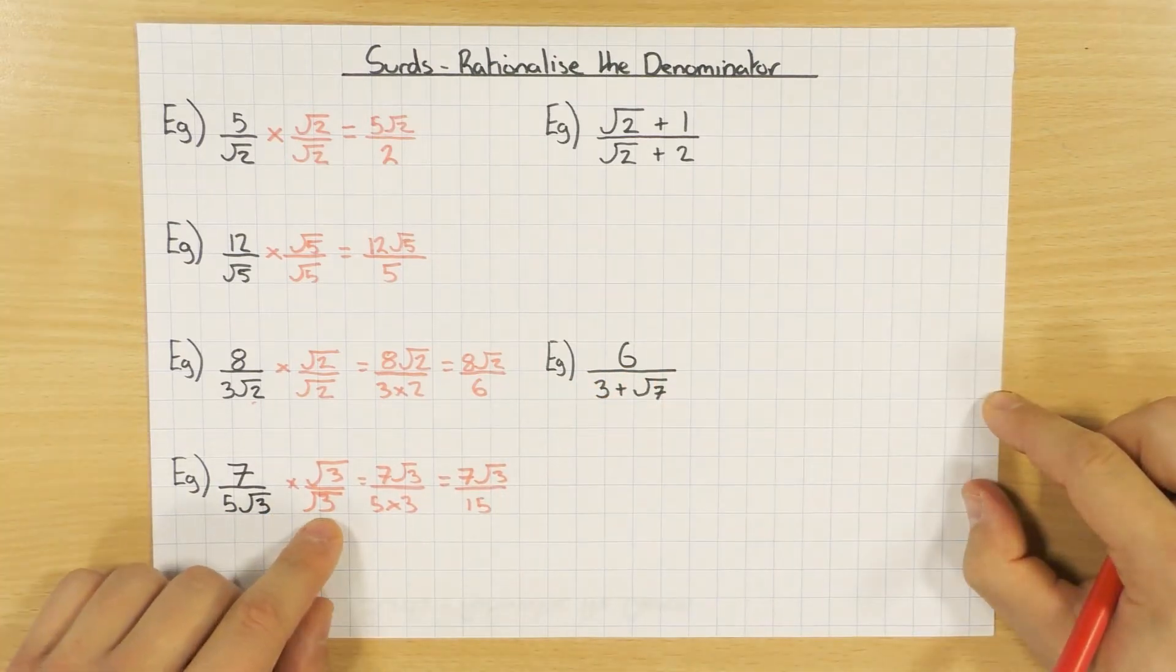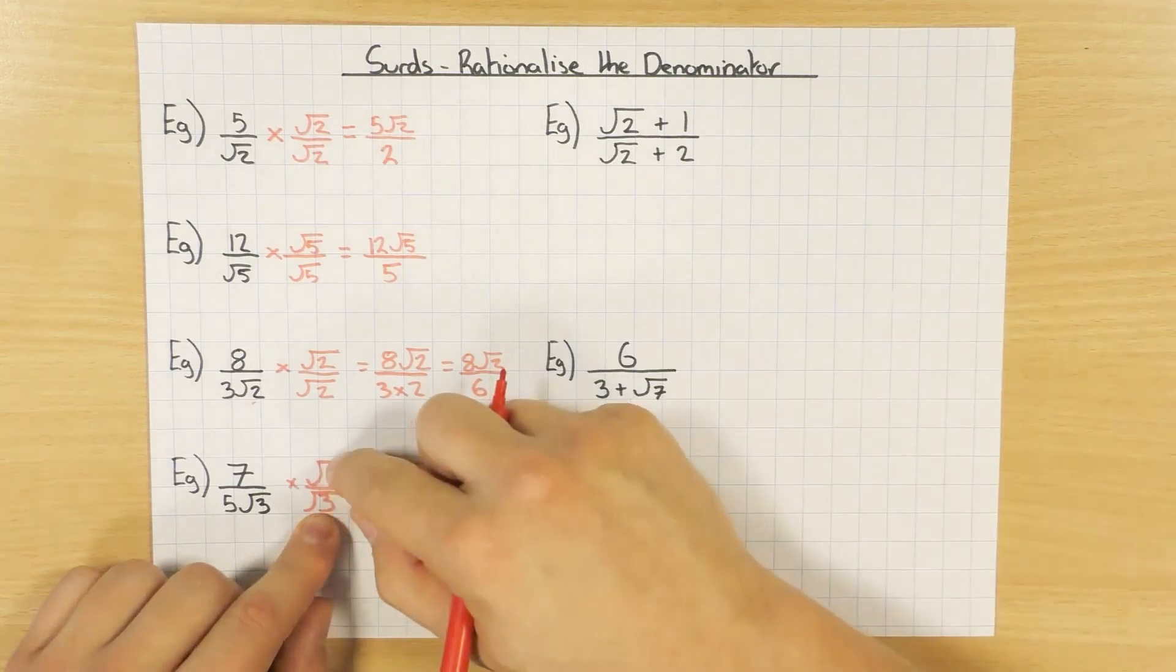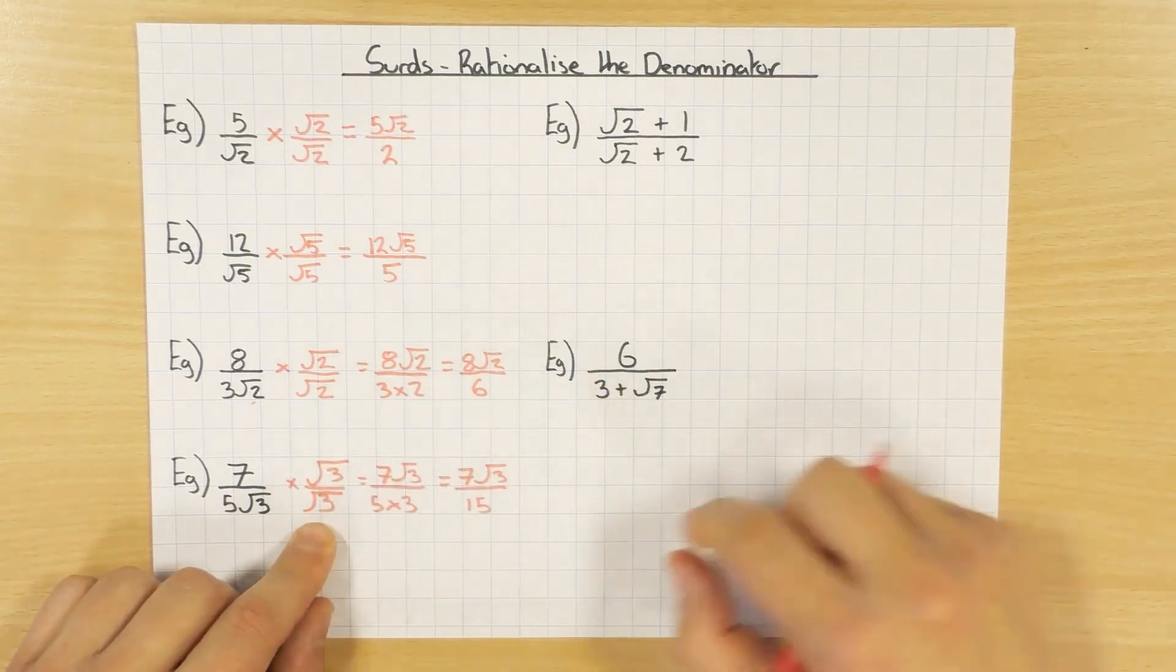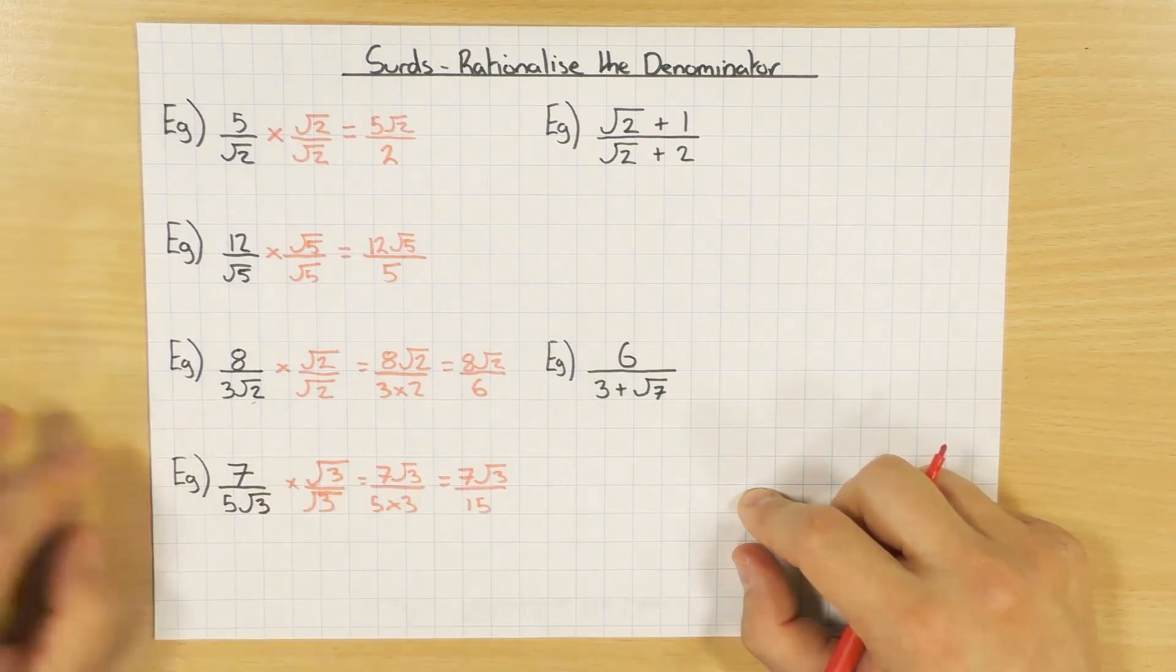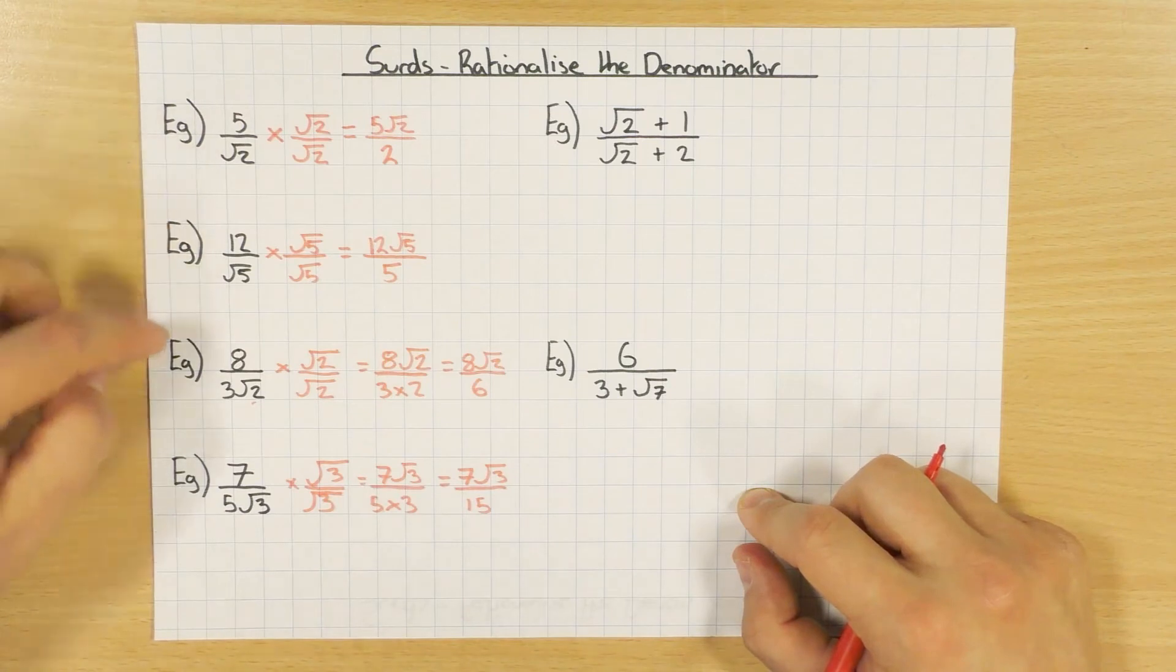So yeah, just in case you did what I just did there, I forgot to do that root 3. Remember, it must be root 3 divided by root 3, so you're timesing it by 1. If I'd have left that as just a 3, can't do it, it'll change the value. So they're the easy ones.